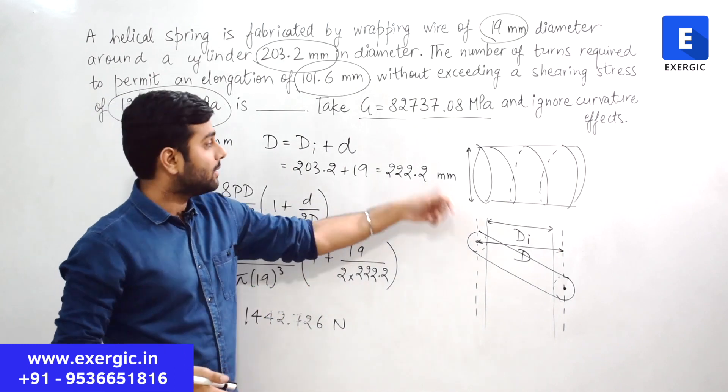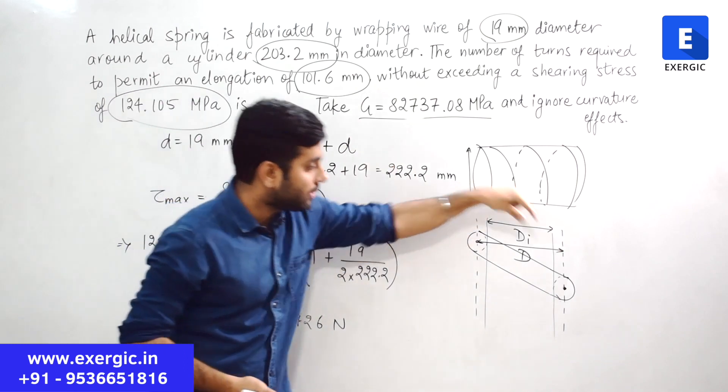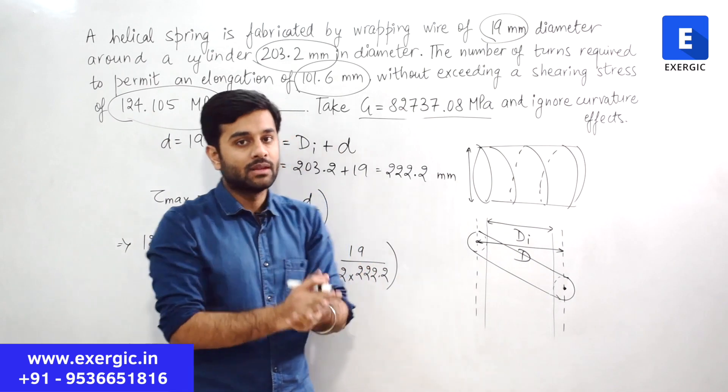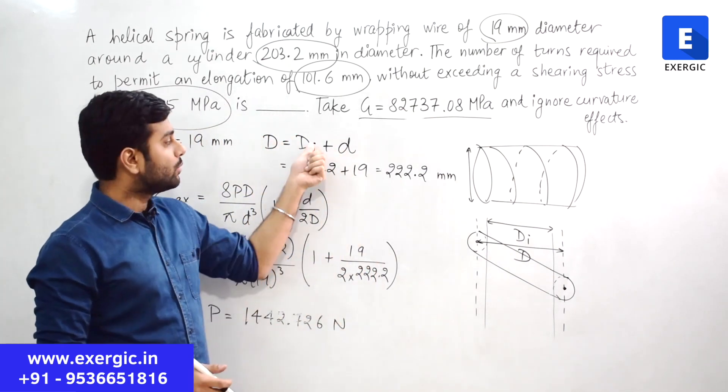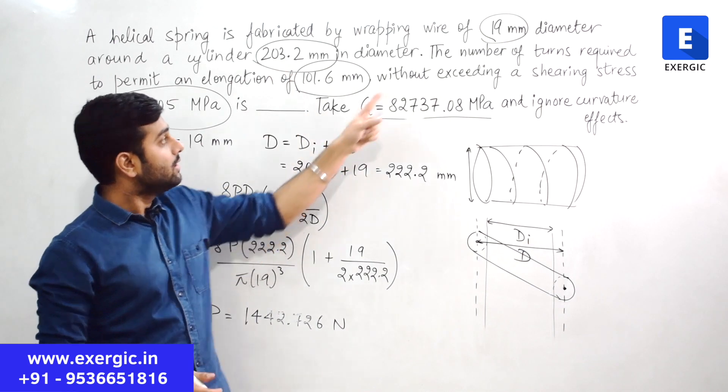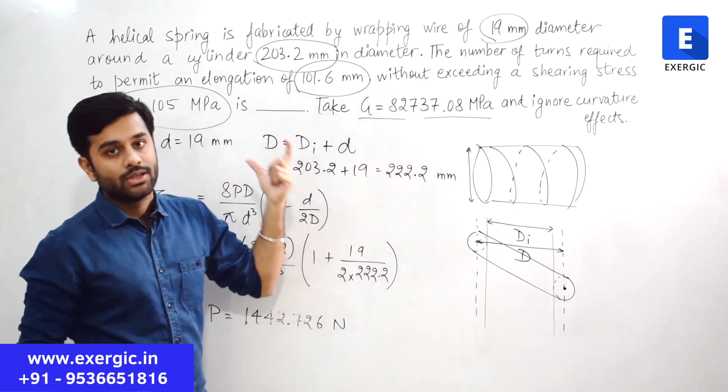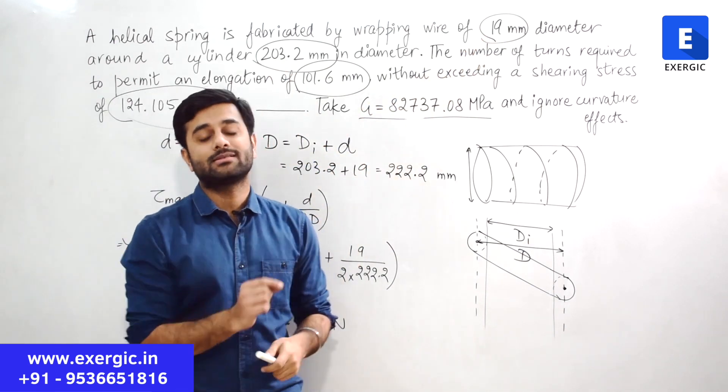Inner coil diameter plus half of the diameter plus half of the diameter on either side will give you the mean coil diameter. So in a way inner coil diameter plus d, d by 2 plus d by 2, in total d will give you the mean coil diameter. You have both the values, DI value is here, small d value is here, put them. You will get 222.2 mm as the mean coil diameter.